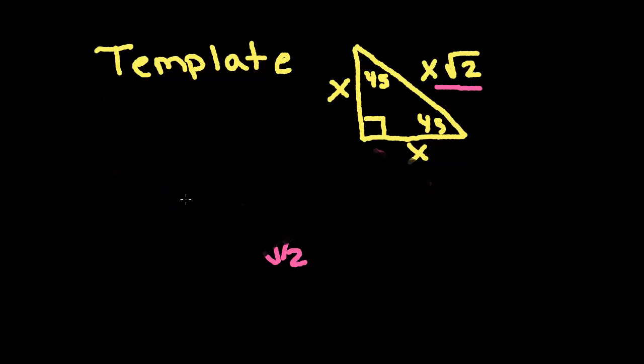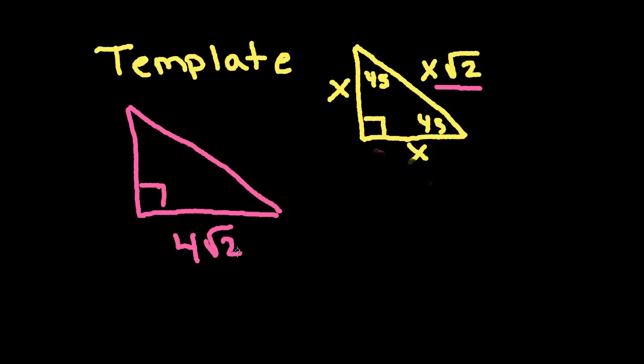All right. So, let's do another one here. In this one, let's say that this side down here now has a square root 2 on it. So, again, this is a leg of the triangle. So, I'm going to set that equal to my template value. So x is going to equal 4 square root 2.